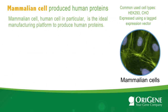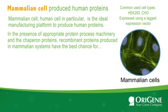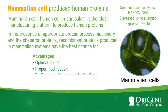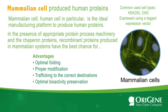Mammalian cells, human cells in particular, are the ideal manufacturing platform to produce human proteins. Their advantages over lower-order expression systems are clear. In the presence of appropriate protein processing machinery and chaperone proteins, recombinant proteins produced in mammalian systems have the best chance for optimal folding, proper modification, and trafficking to the correct destinations, and therefore optimal bioactivity preservation.